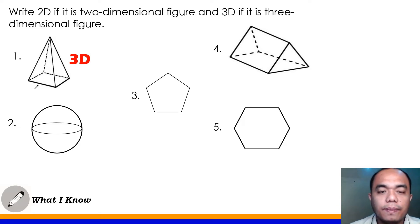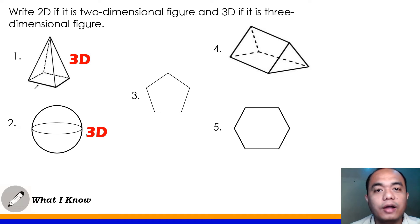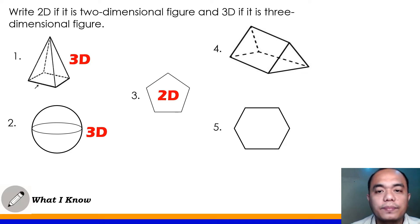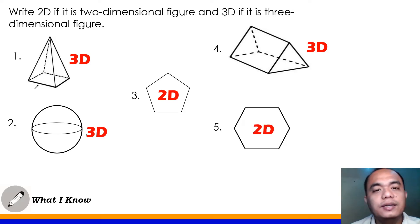Next, number 2 — sphere. Is it 2D or 3D? Yes, that's 3D, a three-dimensional figure. Next, number 3 — that's 2D. Number 4 — that's 2D. Number 5 — that's hexagon. Hexagon is a 2D, or two-dimensional figure.